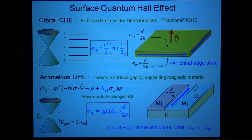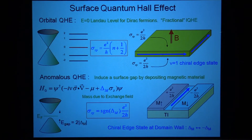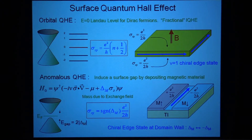Question: Are we working in two-plus-one dimensions? Answer: The important thing is that we're really in three dimensions, but the surface of the three-dimensional object is two-dimensional. So these Dirac fermions are two-plus-one dimensional, but they live on the boundary of a three-plus-one dimensional system.